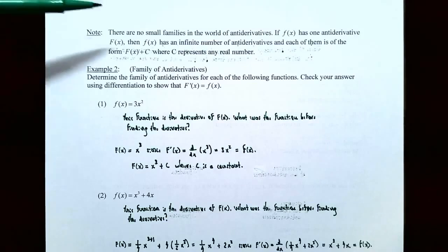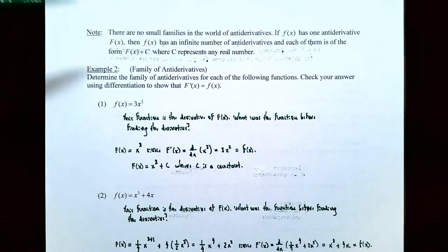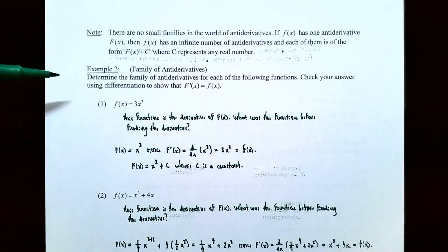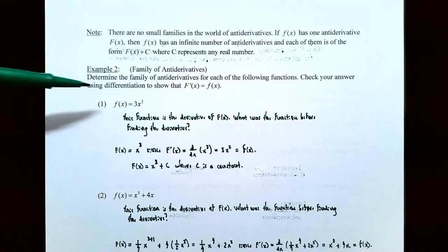Before we do the next example, keep in mind that there are no small families in the world of antiderivatives. If lowercase f of x has one antiderivative, capital F of x, then lowercase f of x has an infinite number of antiderivatives, and each of them is of the form capital F of x plus c, where c represents an unknown real number. Example two: family of antiderivatives. Determine the family of antiderivatives for each of the following functions, then check your answer using differentiation so that capital F prime of x equals lowercase f of x.